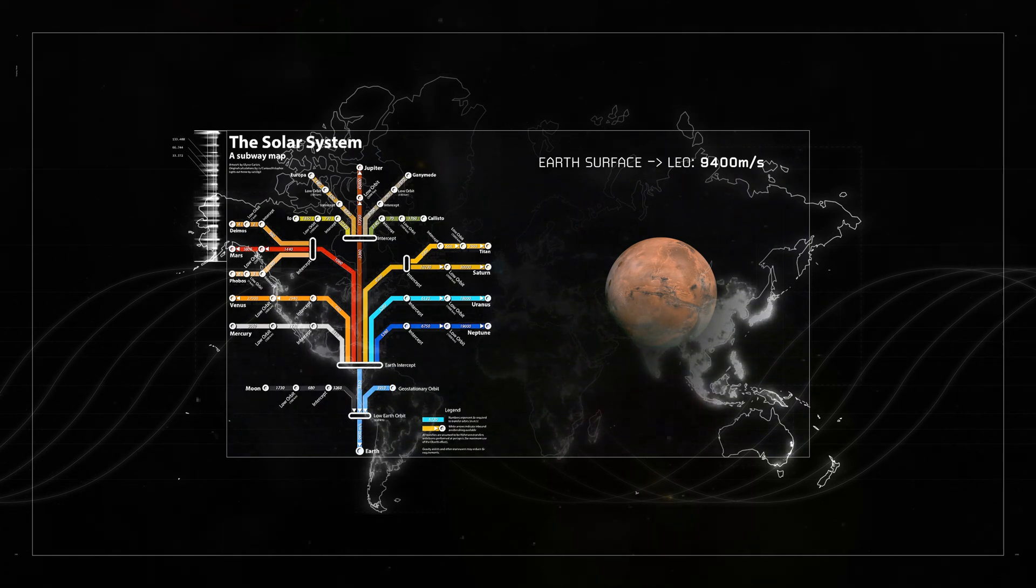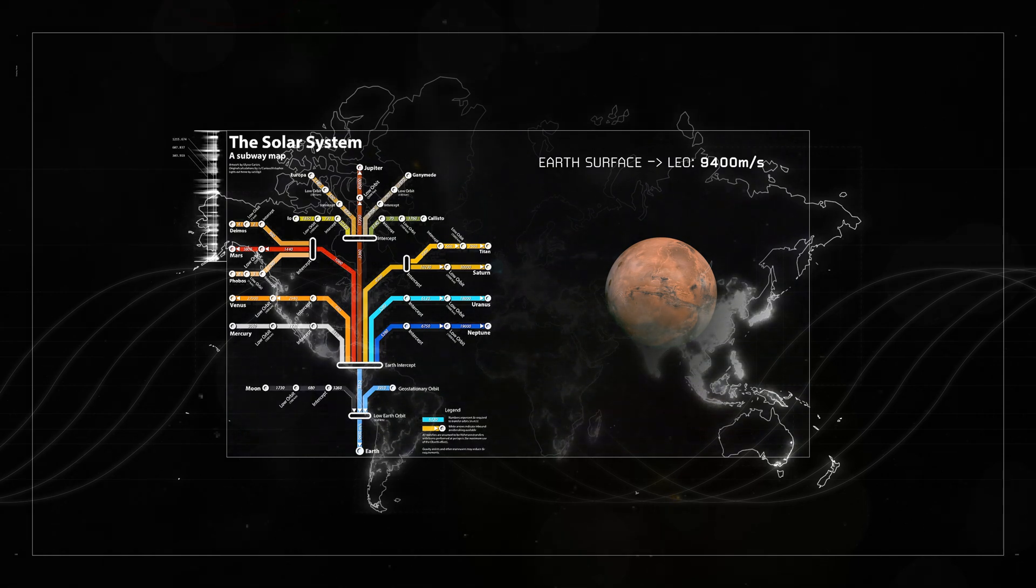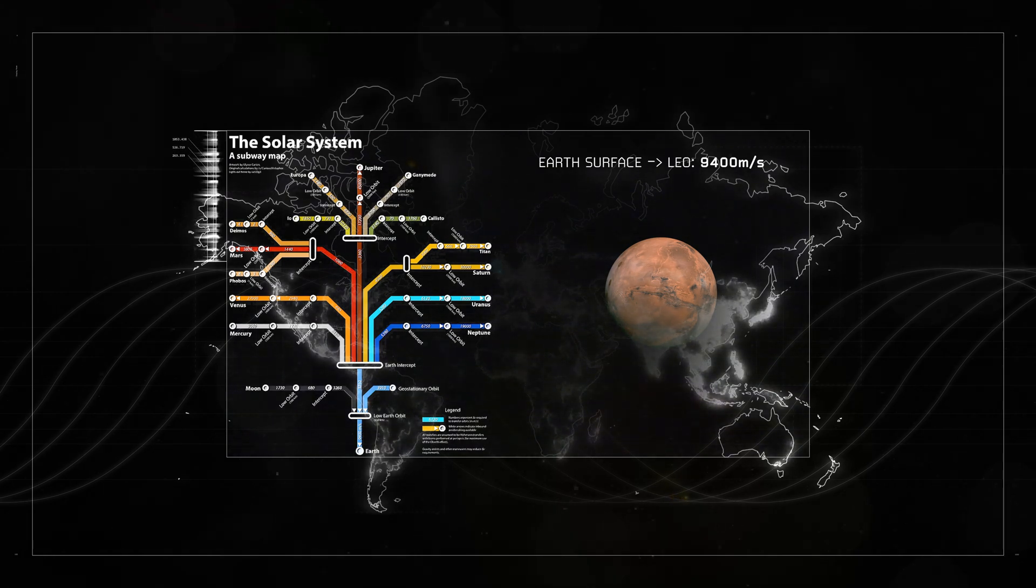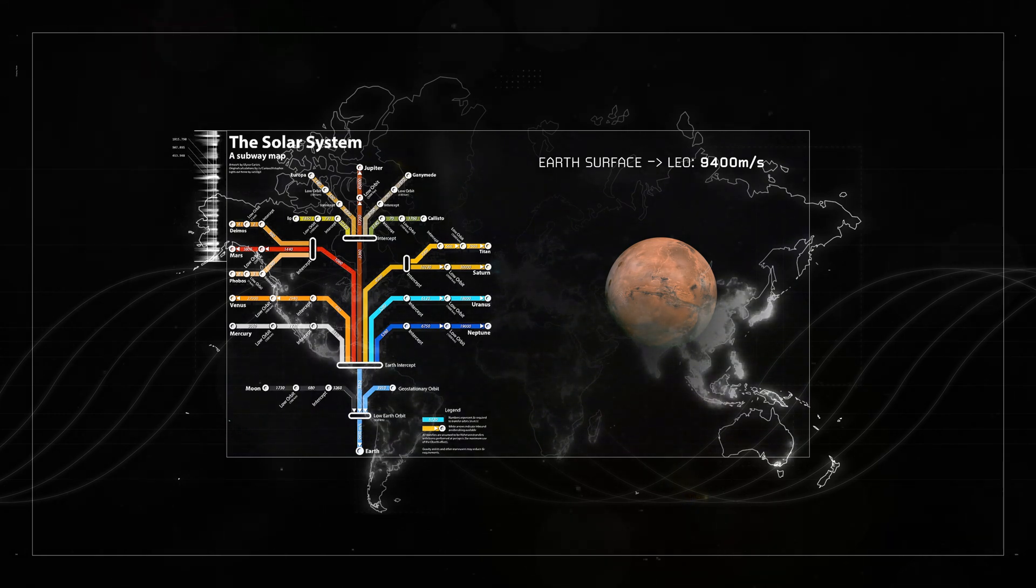If you add up all the values between low earth orbit and the surface of the moon, then you'll find that low earth orbit is actually more than halfway to the moon. It's more like three-fifths of the way there which is pretty cool. From low earth orbit to Mars is 9,510, but bear in mind this is a planet that you can aerobrake onto.